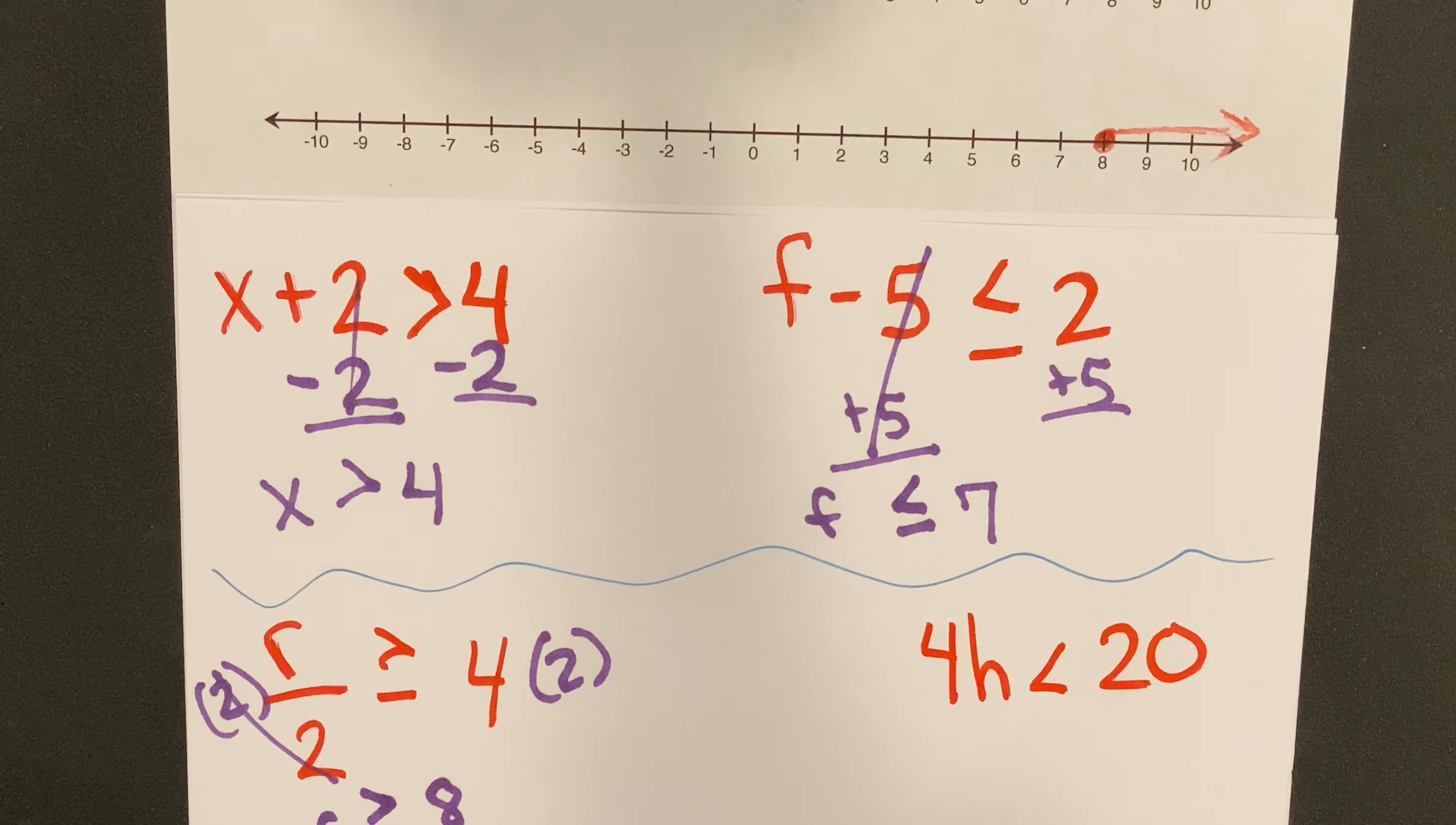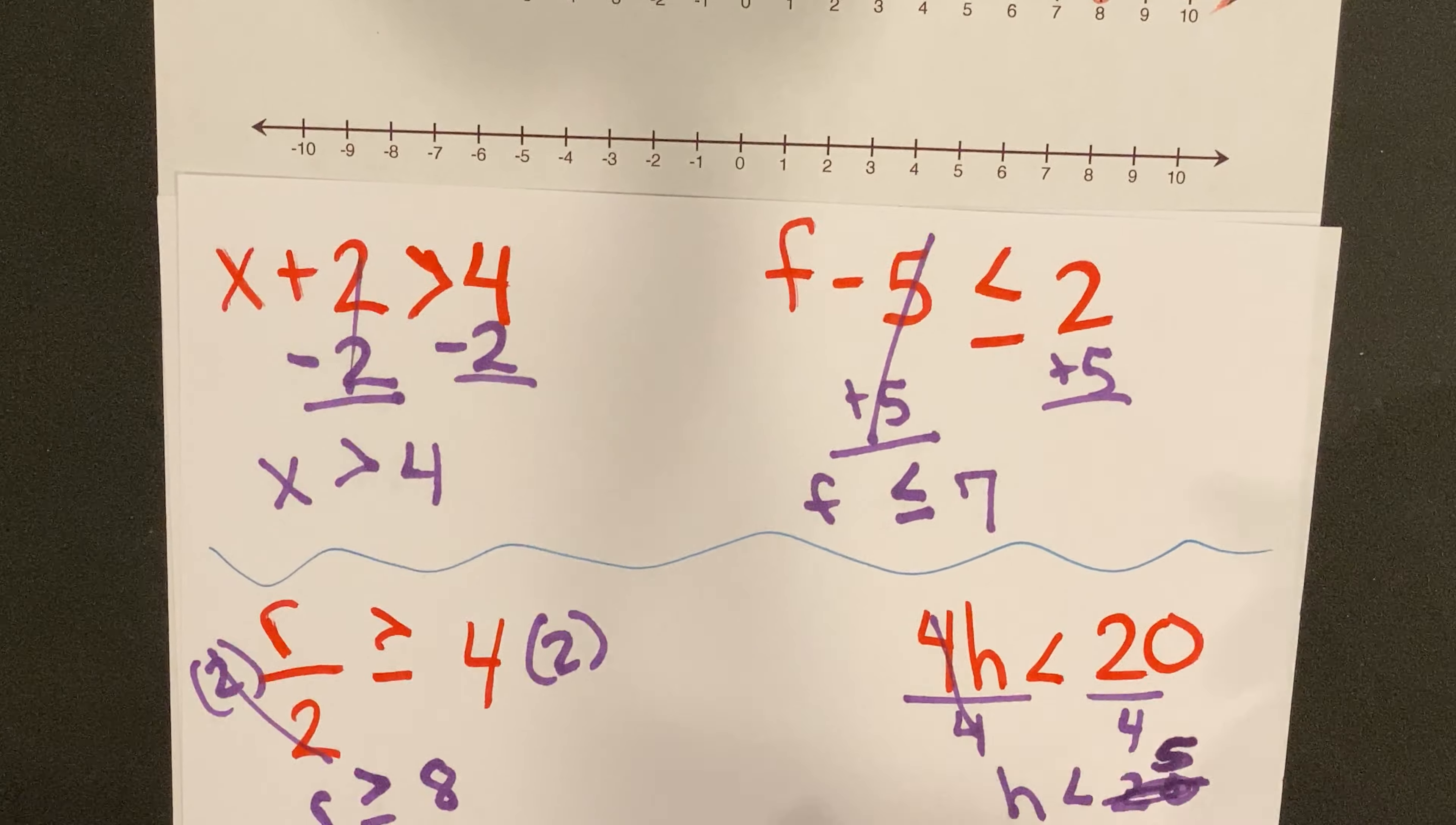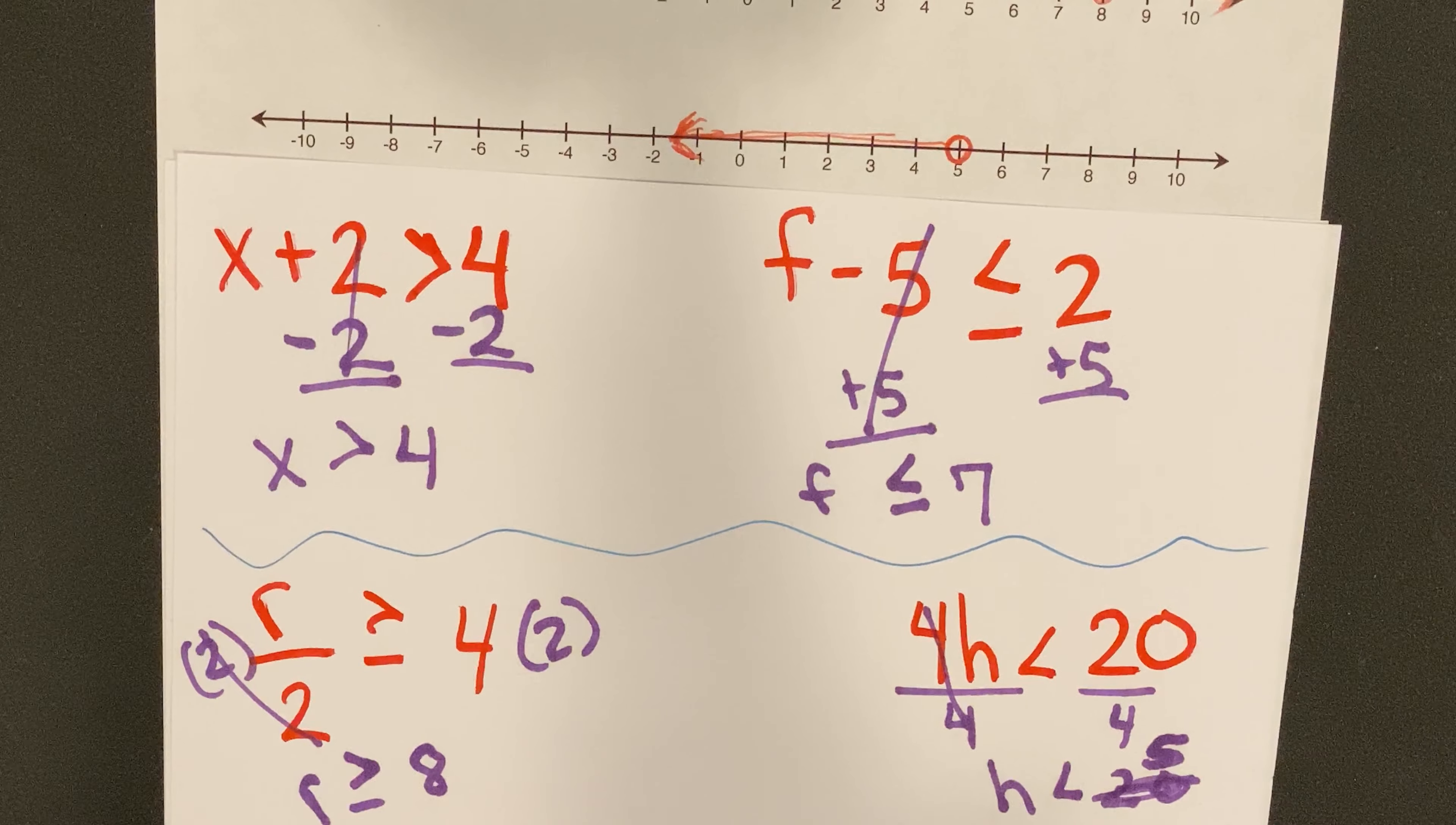So we have 4H is less than 20. That's a nice little spin. Divide both sides by four. H is less than five. So I'm going to go up here, I'm going to plot my point. H is less than five, so I'm going to go here to five and I'm going to keep my circle open, and then I'm going to draw a line that's going to indicate anything from here on out is what the possible answers can be.